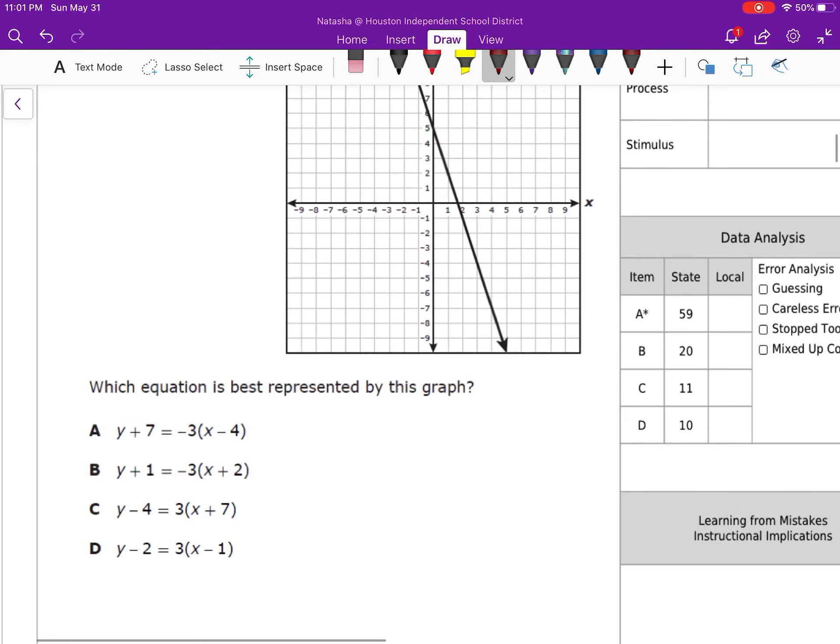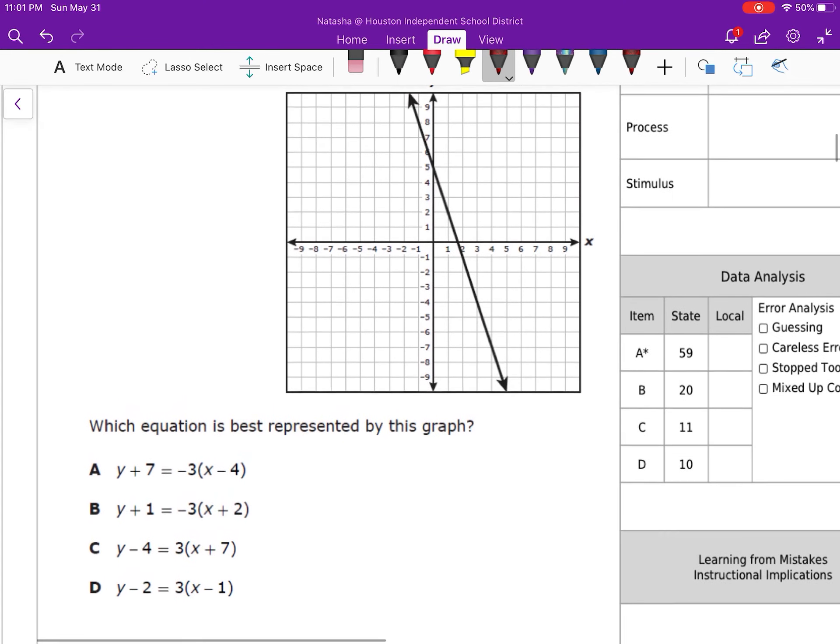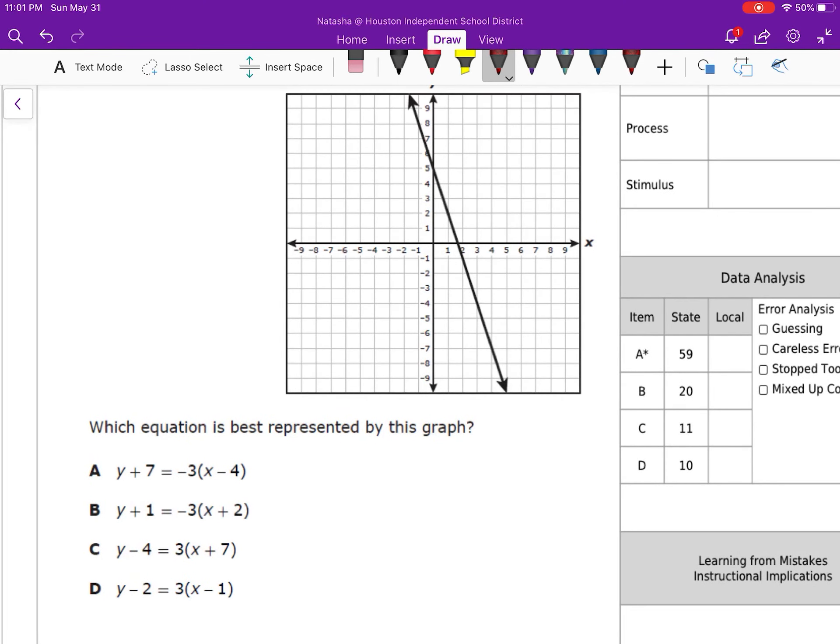We're going to do number 43 just like we did the other one. I'm going to look at my points and I'm going to look at my slope. Here I have a negative slope, so I'm going to eliminate my answer choices that have a positive slope. Now, both of mine has a negative 3, that means I don't even need to look to see what my slope is. I know my slope is negative 3.